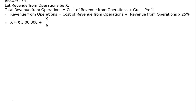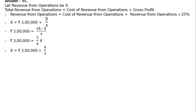Putting in the values: X equals ₹3 lakh plus X by 4. This implies ₹3 lakh equals 3X by 4, so X equals ₹3 lakh multiplied by 4 by 3. Therefore, revenue from operations is ₹4 lakh. Verification: 25% of ₹4 lakh is ₹1 lakh gross profit, and ₹4 lakh minus ₹1 lakh gives ₹3 lakh as cost of revenue from operations.